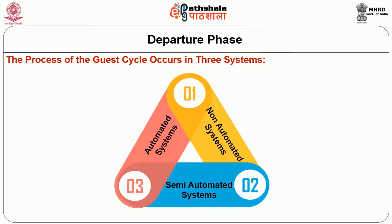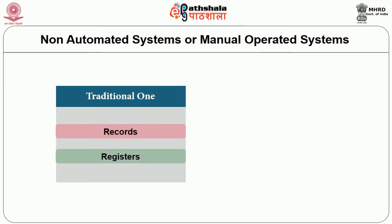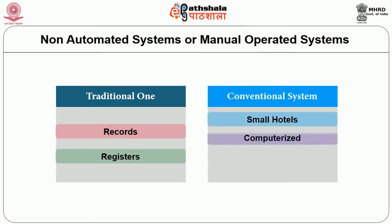Different hotels use different systems. Some hotels are non-automated and operate manually, some are partly manual and partly automated, and luxury and business hotels use fully automated property management software. In a non-automated or manually operated hotel without computers, all guest cycle processes are more laborious. This is a traditional system using records and registers, conventional in small hotels that are not yet computerized.